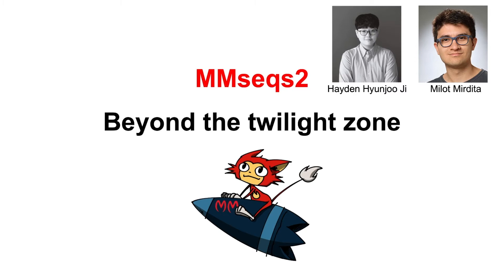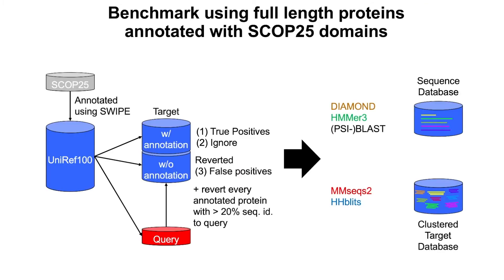This work is led by Hayden Yunjuji and Milut Medita. For the benchmark, we take UniRef100 and annotate it with SCOP25 domains — a redundancy-reduced set. Proteins without annotations are false positives and we revert these sequences; those with annotations are true positives. We pick query sequences, then search them in the set and remove everything within a radius of greater than 20% sequence identity to make it difficult for queries to find hits. We turned this into a sequence database for sequence search tools and a clustered database for profile-based tools like MMSeqs2 and HHBlits.